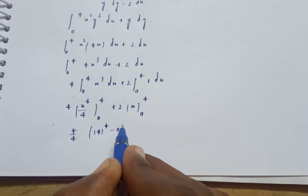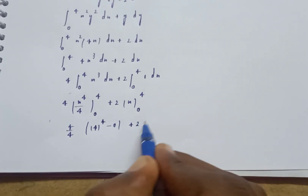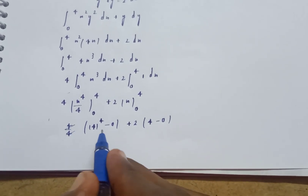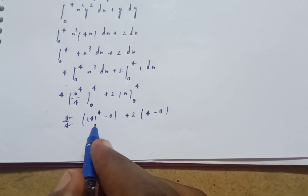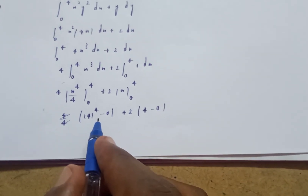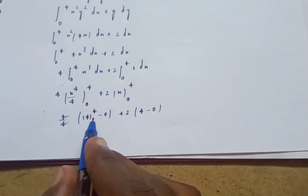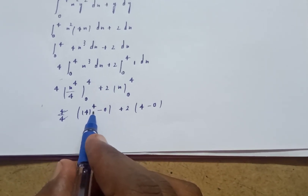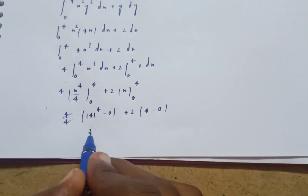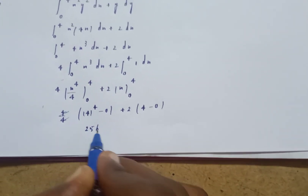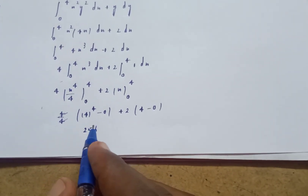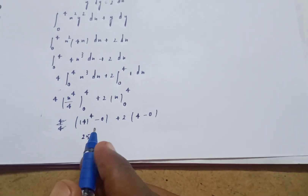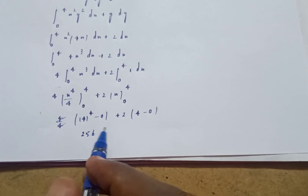Evaluating: 4 times (4 to the power 4 minus 0) divided by 4, plus 2 times (4 minus 0). The 4s cancel, giving 256 plus 8 equals 264. The final answer is 256 plus additional terms giving approximately 264.